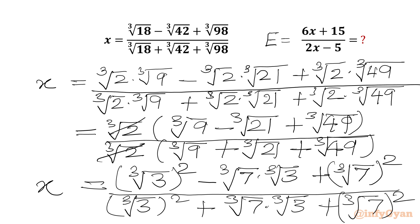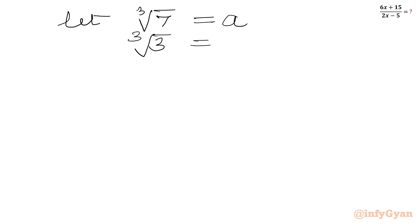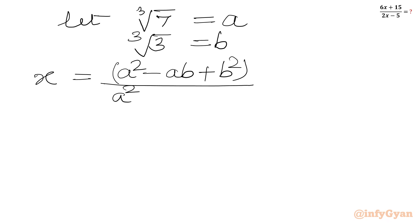Now, if we assume cube root 7 equal to a and cube root 3 equal to b, then the numerator is a squared minus ab plus b squared, and the denominator is b squared plus ab plus a squared. So let cube root 7 equal to a and cube root 3 equal to b. Then x will be equal to (a² - ab + b²) over (a² + ab + b²).